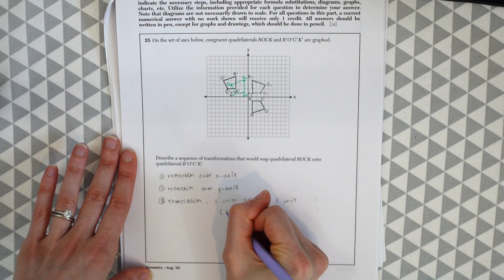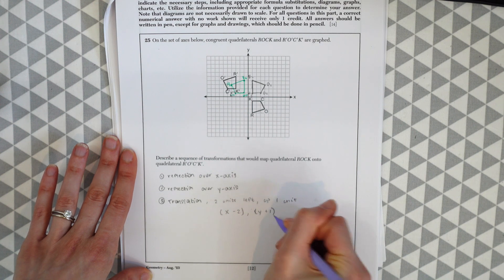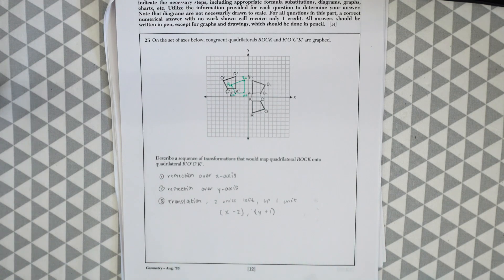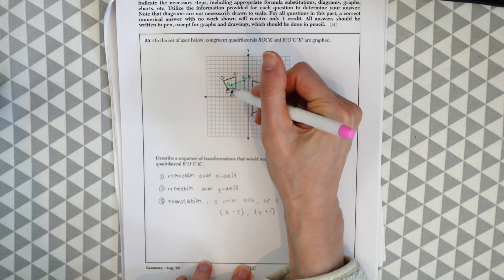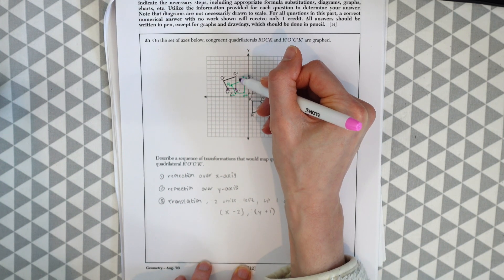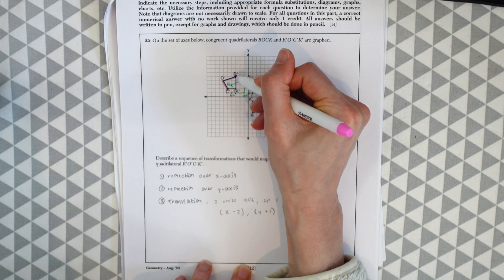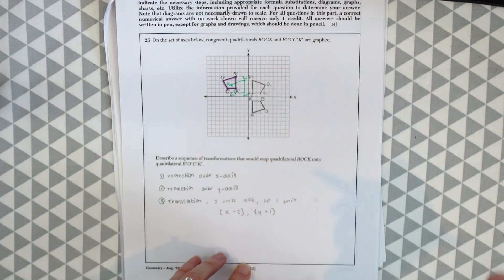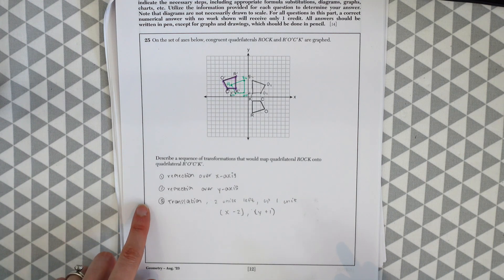So two units left and then up one — this will be x minus two and y plus one. So if we go two units left and then up one, we'll have C prime. Similarly moving K sub 2 and O two units left and up one, you'll see that we end up with the shape they're asking for. So this is our answer: reflection over the x-axis, reflection over the y-axis, and then a translation two units left and up one unit.